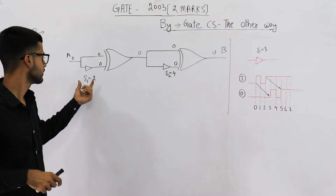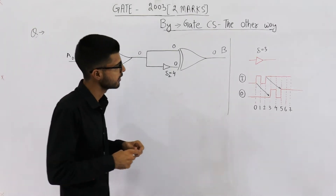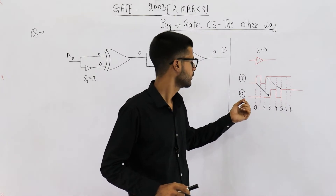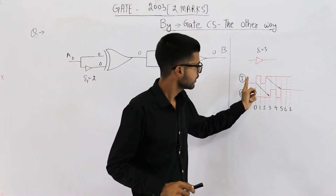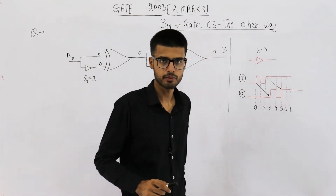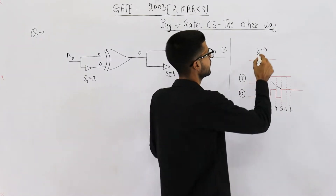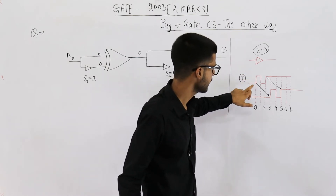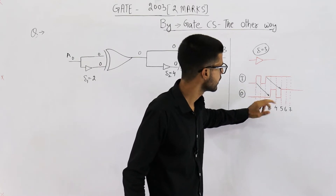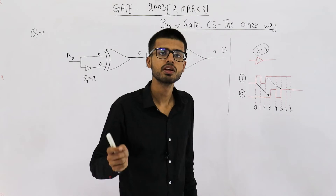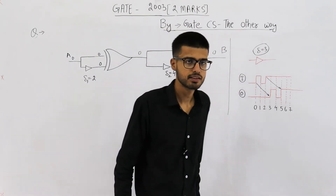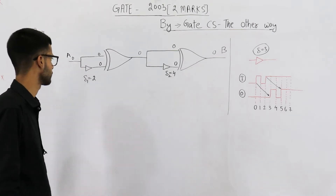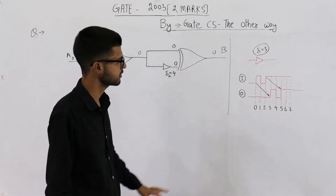A buffer just adds a delay. For example, this buffer has a delay of three nanoseconds — whatever the input waveform, it will be output exactly the same but delayed by three nanoseconds. You can notice the input changes from low to high at time zero; that transition is delayed by three nanoseconds and appears at the output at time equal to three. I've drawn this just to explain what this buffer is, even though we've discussed it in theory lectures.